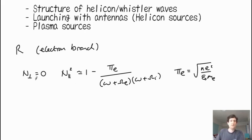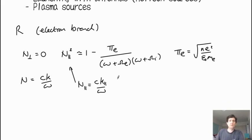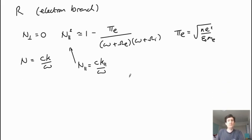And these n's, so here n is just c times k over omega, so n parallel is the parallel k component. So here n parallel is just c times the k parallel. K parallel is the wave number along the magnetic field. These are parallel waves. We looked at them in the previous video.